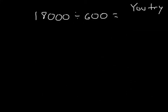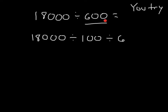Okay, it's your turn to try. I'll help you a little bit here — remember, we're first going to break down 600 by expressing it as 100 times another number. So we get 18,000 divided by 100, divided by 6, because 600 is expressed as 100 times 6. Then figure out that answer, divide by 6, and you'll have your complete answer. Pause the video.